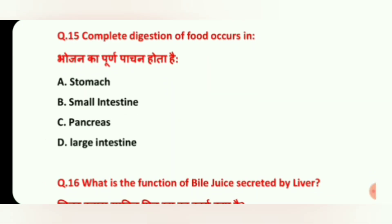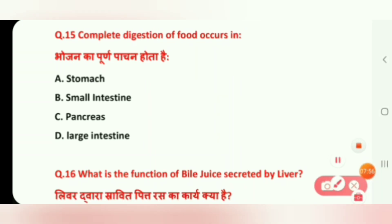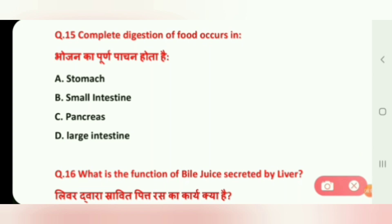Question 15: Complete digestion of food occurs in which part? Options are: Stomach, Small Intestine, Pancreas, and Large Intestine. The correct answer is B, Small Intestine.